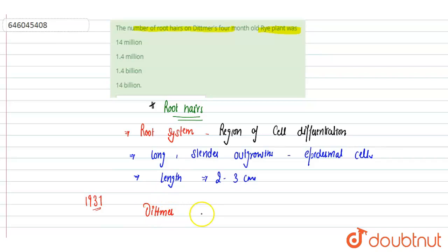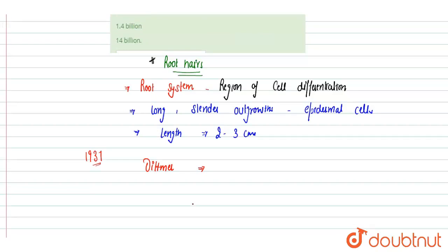In 1937, Ditmer during the experiment determined and estimated the number of root hairs in a rye plant. So he determined number of root hairs in four-month-old rye plant, which is one of the members of the grass family.